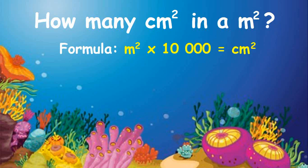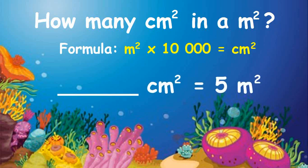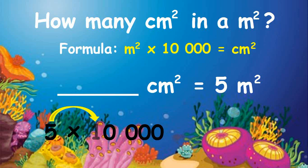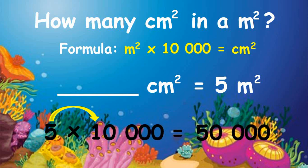Let's have an example of finding the square centimeters of five square meters. To solve, just multiply: five times one equals five, then add the number of zeros in ten thousand, which is four, to the product. Therefore, five square meters is equal to fifty thousand square centimeters.